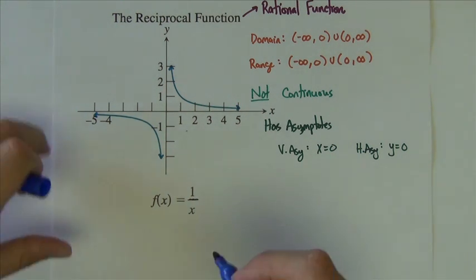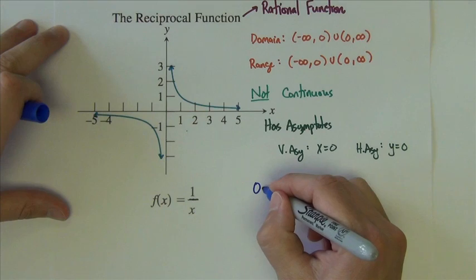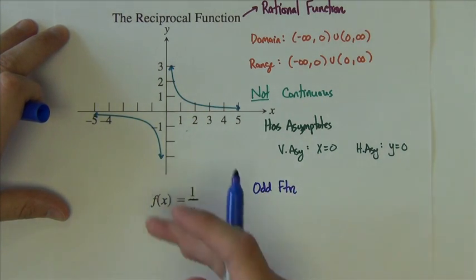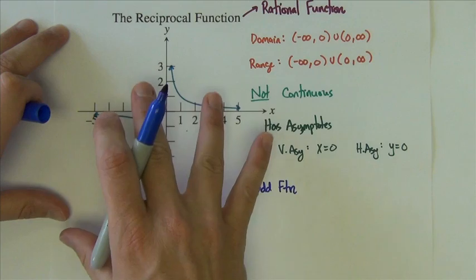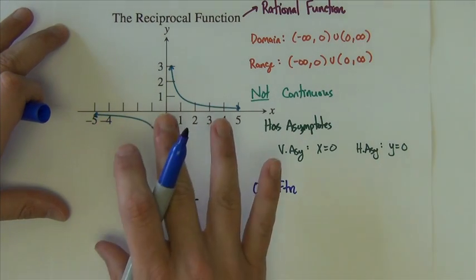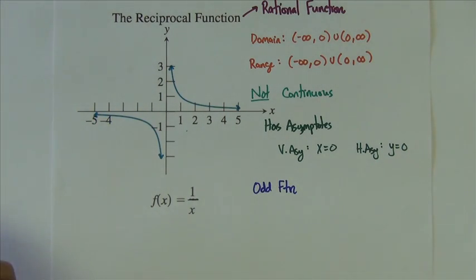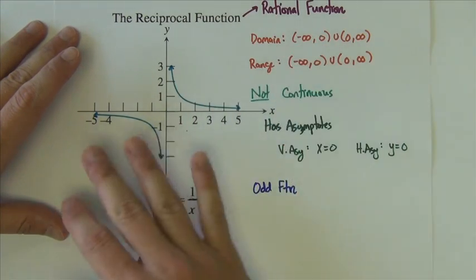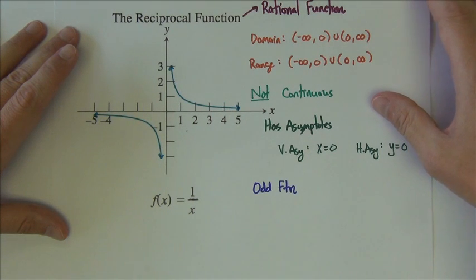Let's see. What else can we say about this particular graph? We can say that it is an odd function. It's got symmetry about the origin. This one does—they don't all, but this one does. And it doesn't have any minimum or maximum values as it goes down forever, up forever. There's no min or max here to deal with.